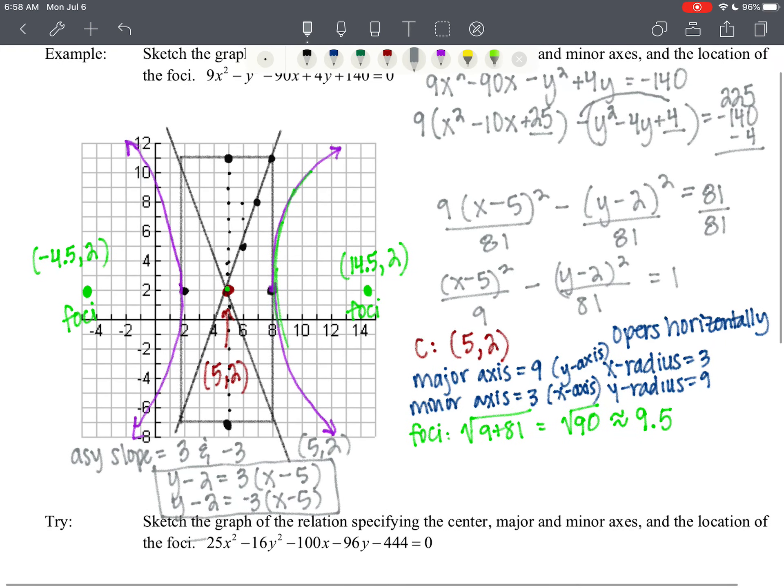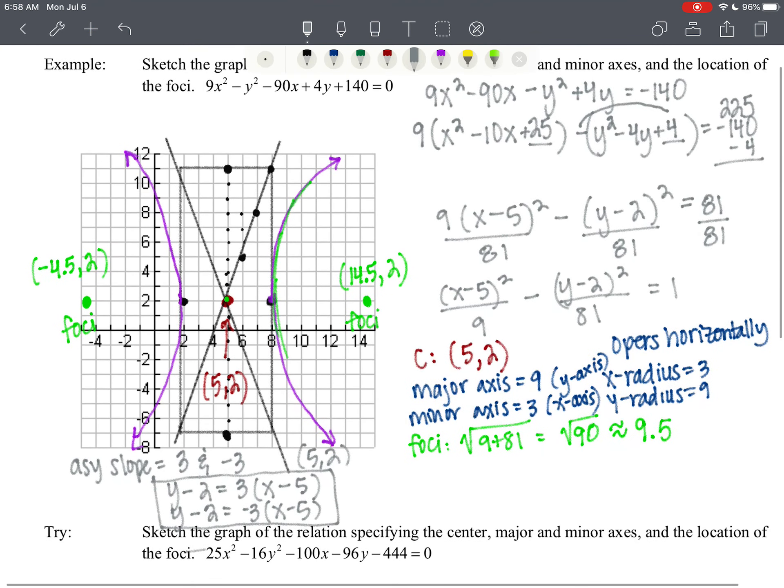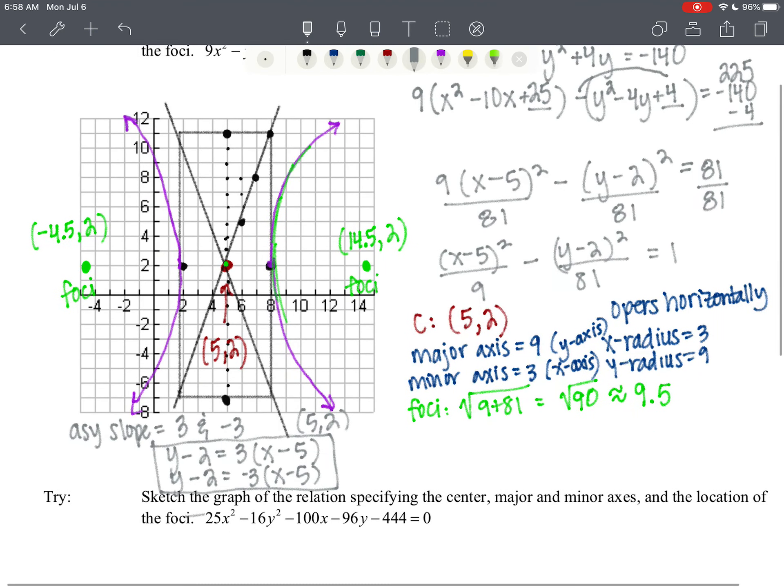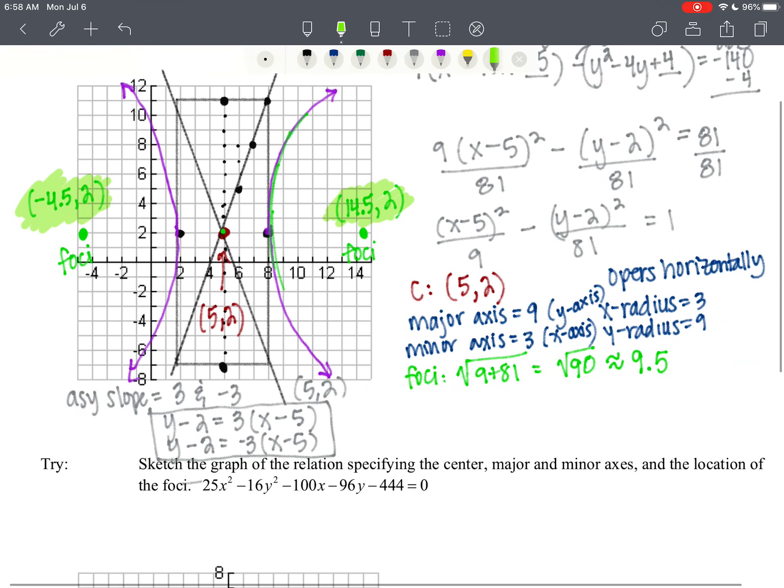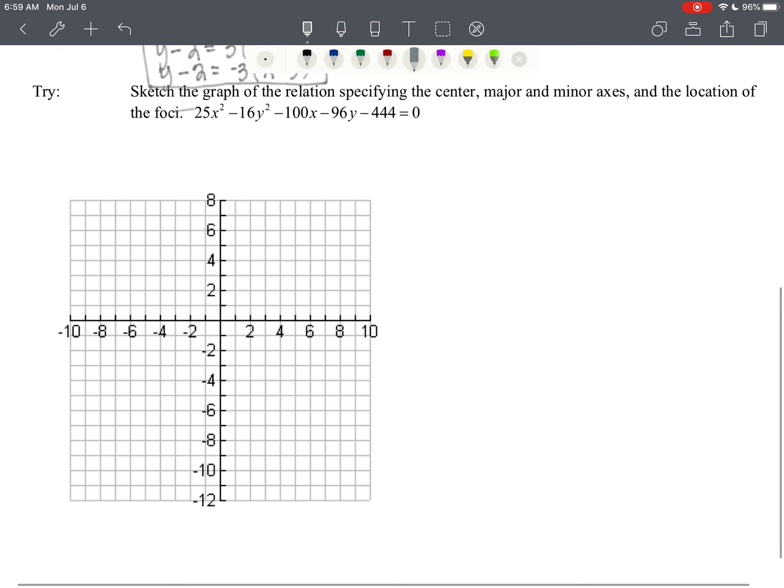Our center is at 5, 2. The major axis is 9, the minor axis is 3. 9 is the y-axis and 3 is the x-axis. The location of the foci. Let's just be clear. The location of the foci are the ordered pairs. So not the 9.5, 9.5 just tells us how to get the ordered pair. And then the equations of the asymptotes are right below. Okay, in the next video we'll do this try, and that's going to finish it up for this lesson.